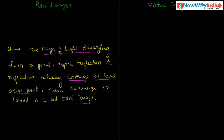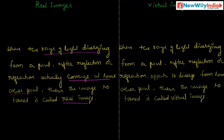Next, what is the virtual image? When the rays of light diverging from a point, after reflection or refraction, appear to diverge from some other point, then the image so formed is called a virtual image. The rays of light diverging from a point, after reflection or refraction, appear to diverge from some other point — then a virtual image is formed.